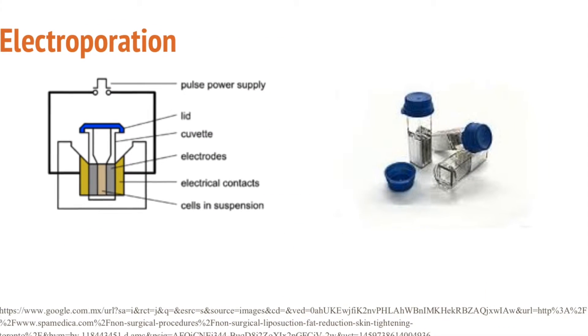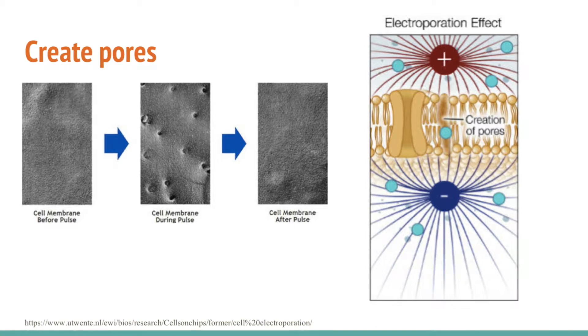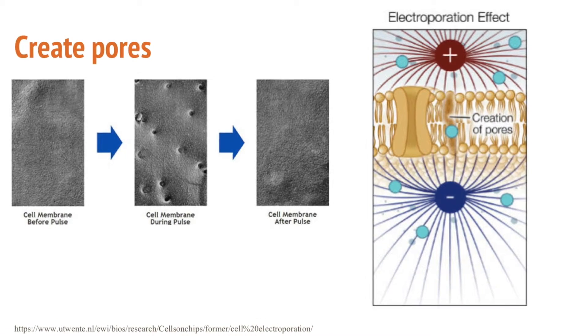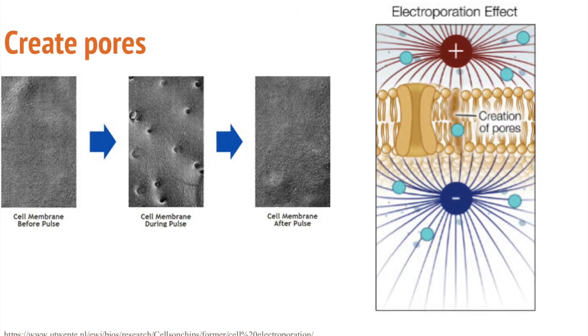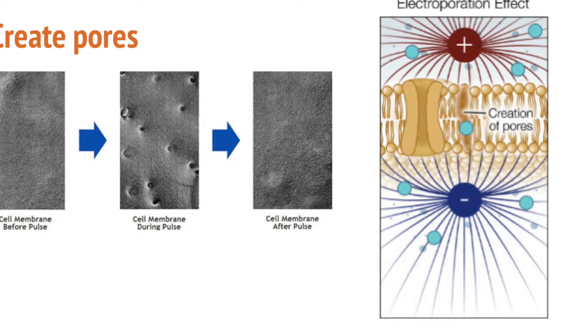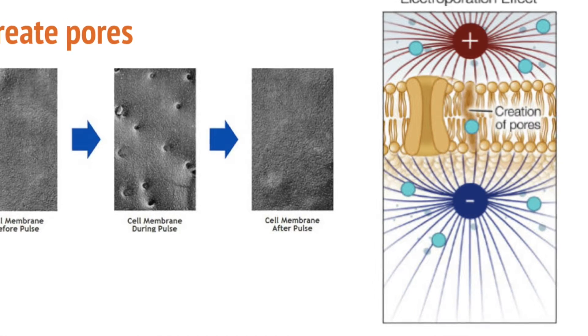Electroporation is a method based on the use of electrical pulses. The cells and the DNA are introduced in a conductive solution and an electrical circuit is closed around the mixture. An electrical pulse is then delivered for a few milliseconds or microseconds. The cell membrane is permeabilized by the electrical pulse, resulting in the formation of temporary pores.